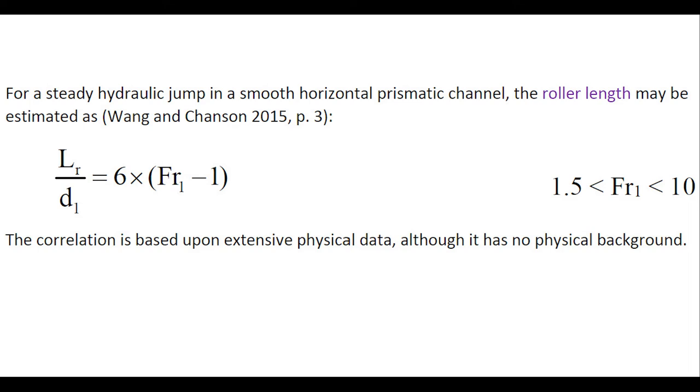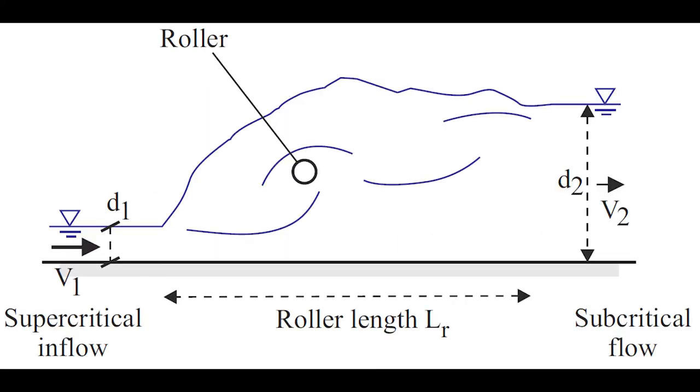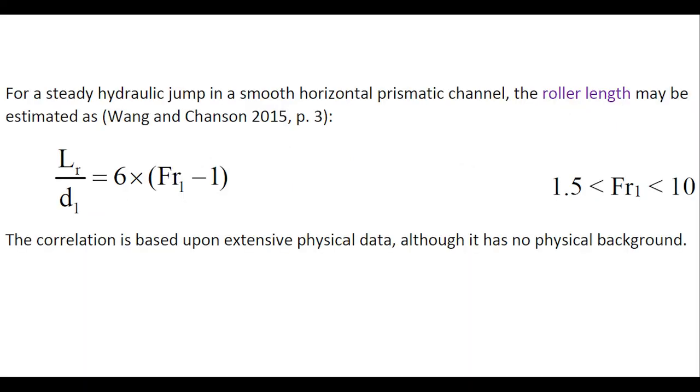For a steady hydraulic jump in a smooth horizontal prismatic channel, the length of the roller, LR, may be estimated as shown here, a correlation based upon extensive physical data, although it does not have a physical background.